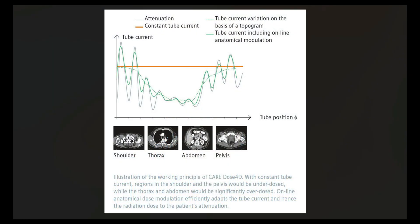Here we have a graphic showing how this works. As we scan through the body, the tube current modulates in the X and Y position — those are the peaks and valleys you see here. Going through an anterior projection we may use more mAs, and through a lateral projection we may use less. The tube current increases and decreases as the tube rotates around the patient. We also have modulation in the Z direction — the axis we're scanning through — so we might use more mAs through the abdomen and pelvis than through the chest.